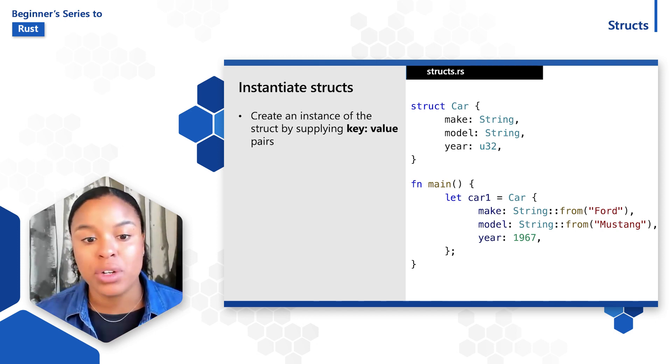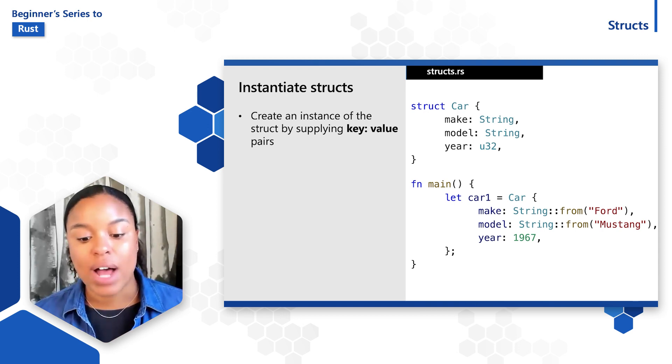Inside of the main function, we'll go ahead and declare a new variable called car1 by saying let car1, and that is going to be equal to the car struct. So then inside of that, we can specify the attributes about the car like this. We define a specific make, which is a string with Ford as the value.